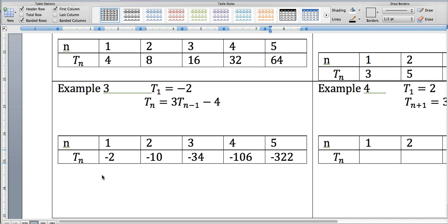These are the answers to example number three. Double check that you make this. So three times negative two is negative six minus four would be negative ten, and so on.